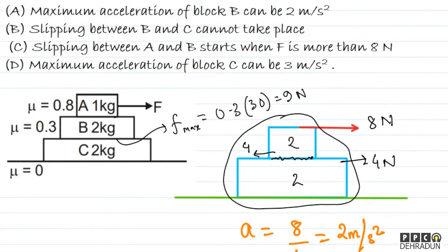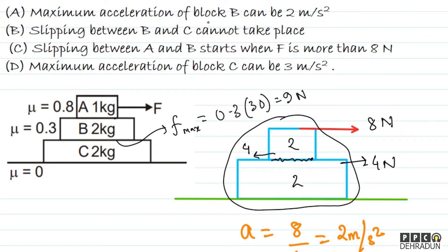So we can see that the first option — maximum acceleration of block B can be 2 m/s² — is completely correct. When A applies maximum friction on B, blocks B and C move together at 2 m/s². So I'll tick option A as correct.